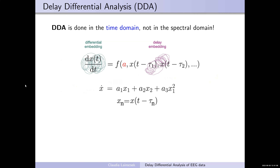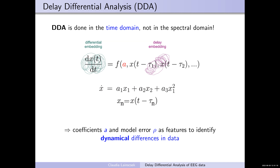DDA is done in the time domain and not in the spectral domain. On the left side you have the differential embedding, on the right side the delay embedding. We use very sparse models of only three terms. The delays are fixed; the model does not update. You get the coefficients A1, A2, A3, and the model error. You can have the fitting error from the left and right side to identify dynamic differences in the data.